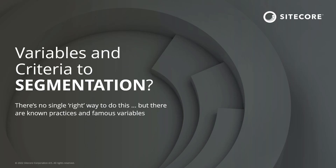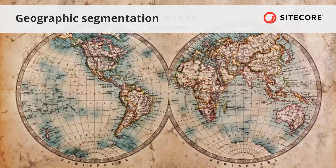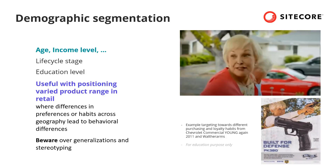There are many ways to build your segmentation criteria. There's no single right way, but there are known practices and common variables that sometimes overlap. For example, you can categorize customers based on where they are located — their country, specific cities, or the climate they live in. Demographic segmentation categorizes customers based on non-identifiable traits such as age, income level, or lifestyle. This is useful when differences in preferences and habits lead to different purchasing behaviors. Be aware of generalization and stereotyping in demographic segmentation, and note that some countries and regions have regulations you should consider when designing it.